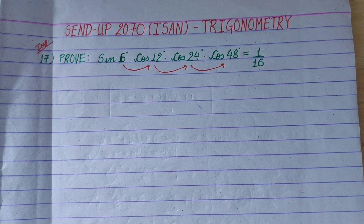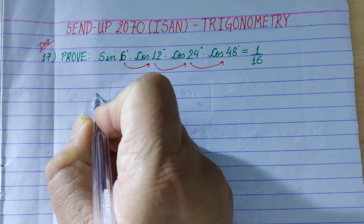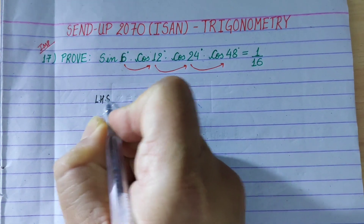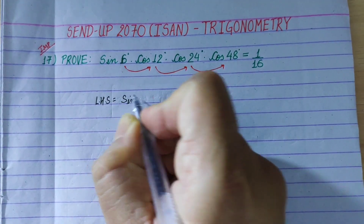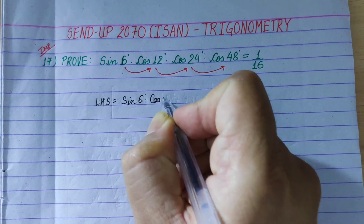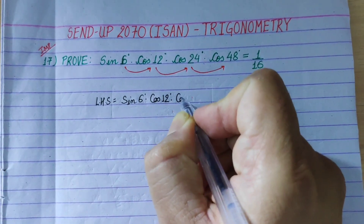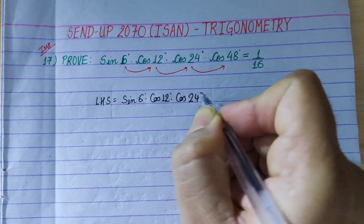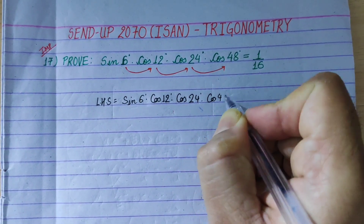So starting with the LHS: sin 6° times cos 12° times cos 24° times cos 48°.